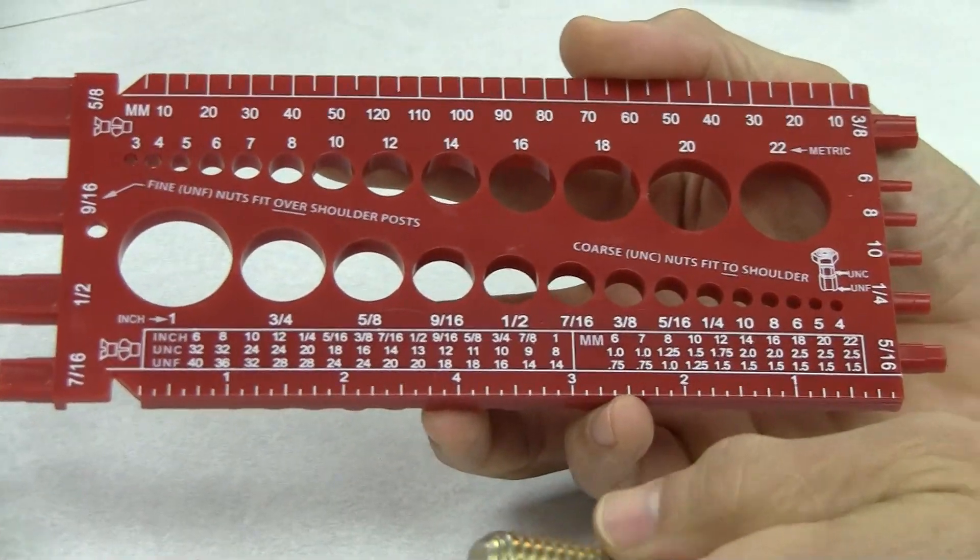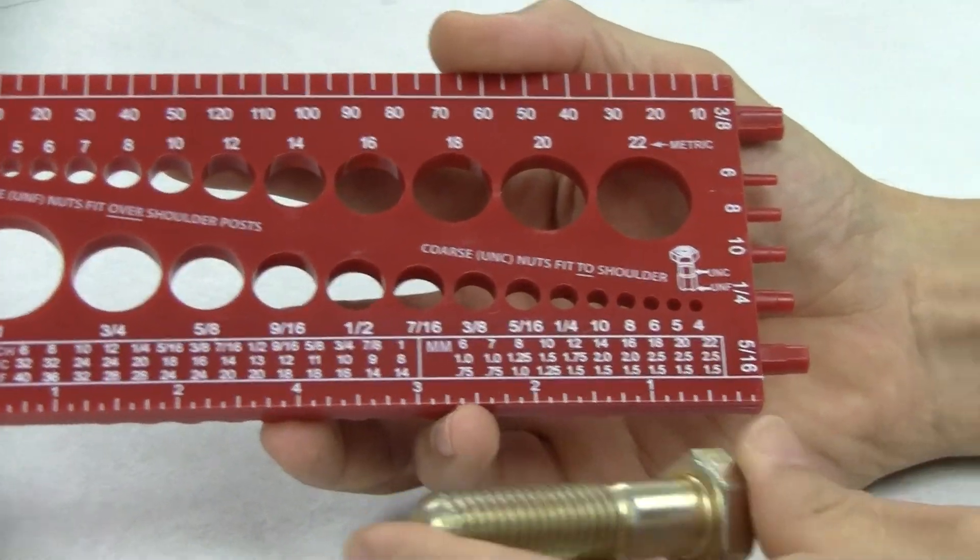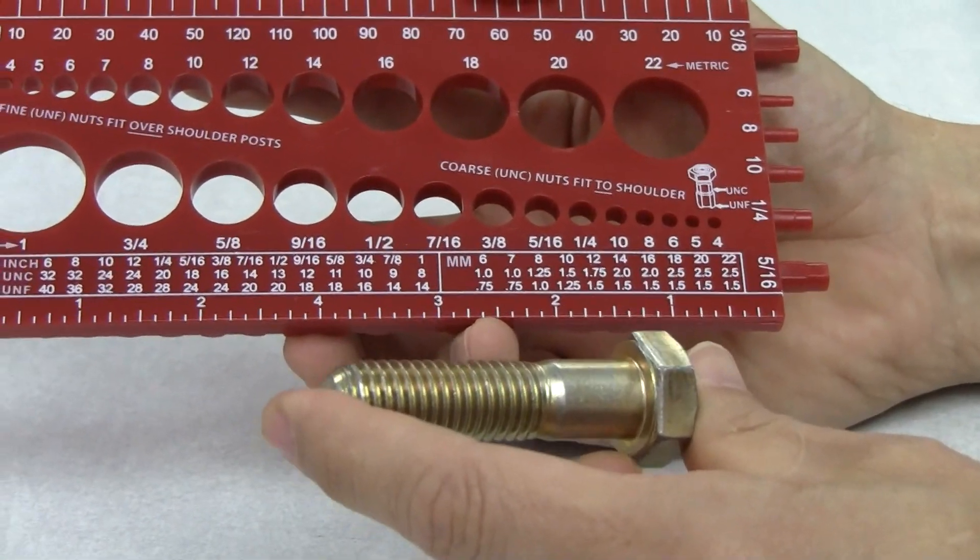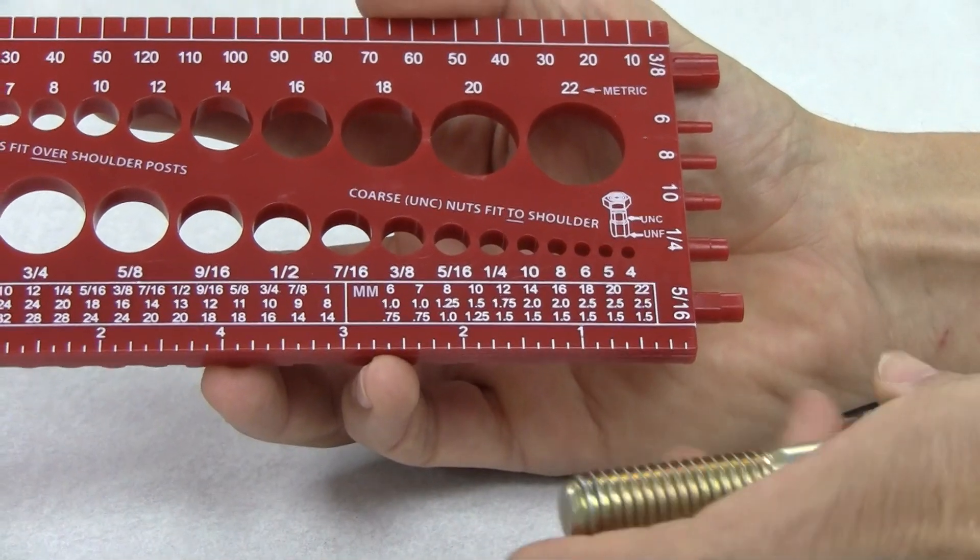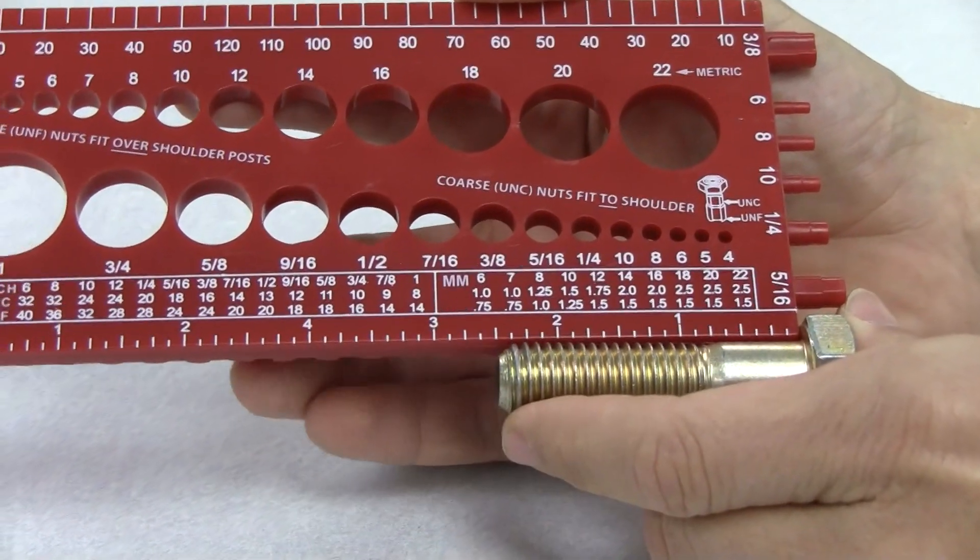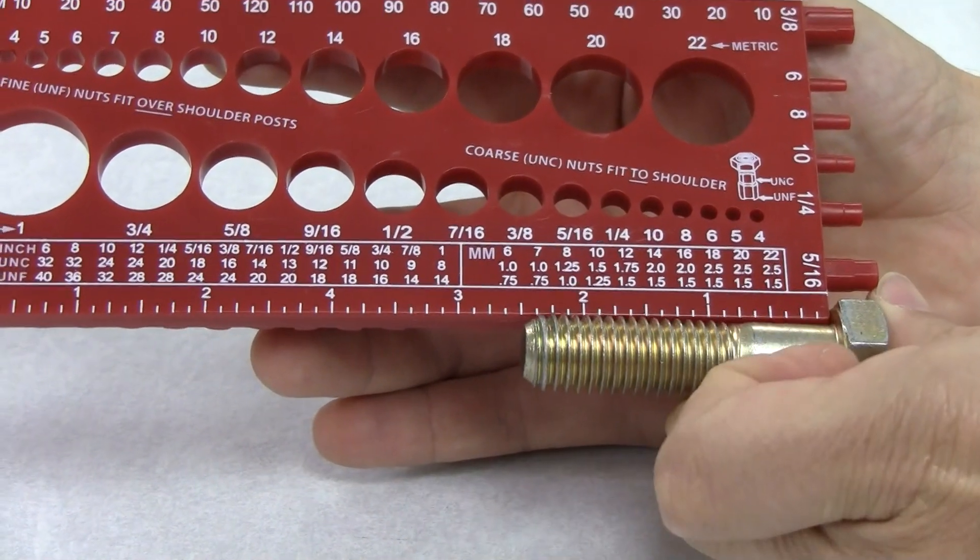The other measurement that we do need would be the length of the cap screw. Cap screws like this are measured from the bottom side of the head to the very tip. In that case, what we would do is use this shoulder of this ruler right down here, place the cap screw in place, and you'll notice that this one would be 2 1/2 inches long.